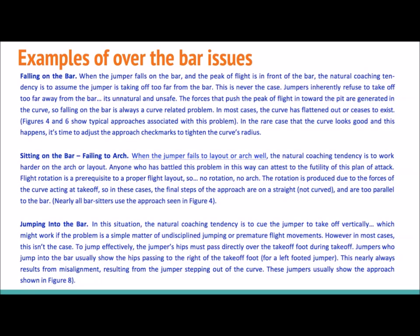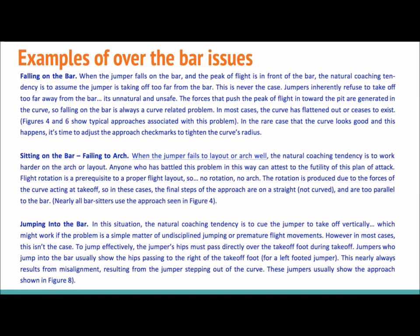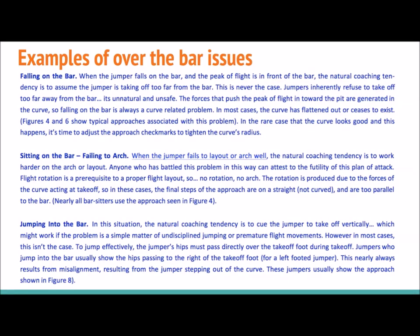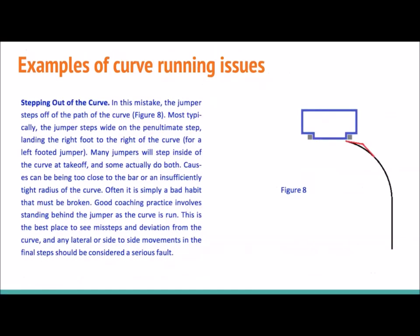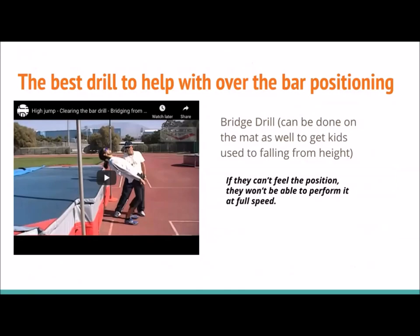Jumping into the bar is common when moving to a new height. It's not always about not jumping high enough — it comes back to the curve. If the hips aren't tilted to maintain curve speed and the athlete is too upright, the force of the curve throws the body at the bar. If the mark is too far away and their body position isn't correct, they can't maintain speed. The jumper's hips must pass directly over the takeoff foot during takeoff — if standing upright, the foot stays under the hip and can't travel over.